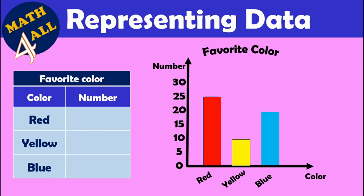Now let's solve this graph. Here you have a bar graph with missing data — you need to complete the table. The graph shows favorite colors. The first color is red. Looking at the graph, 25 people chose red, so you will write 25 in the table.